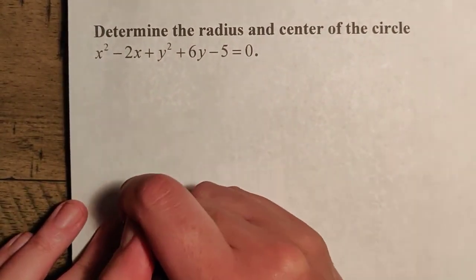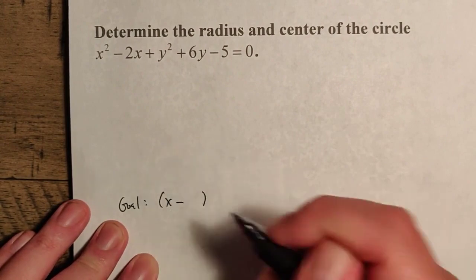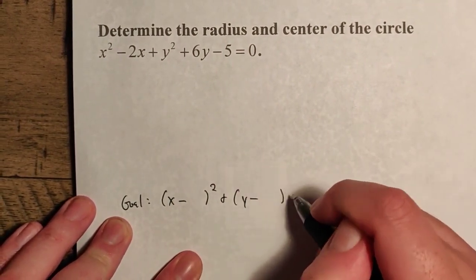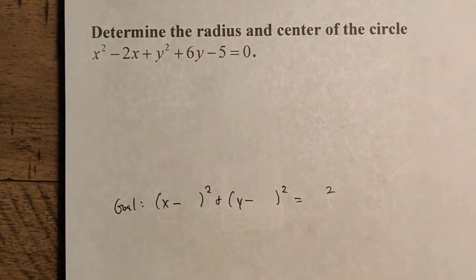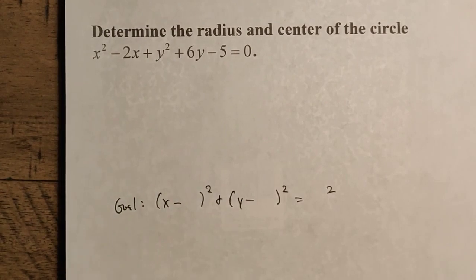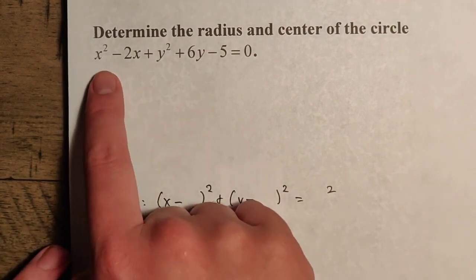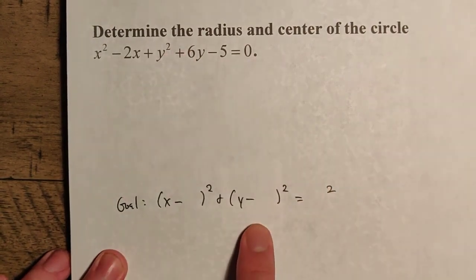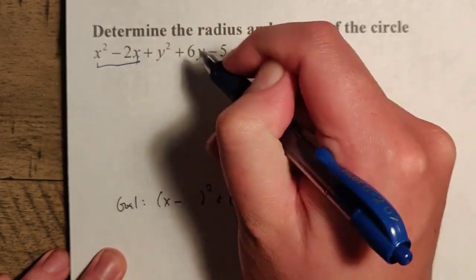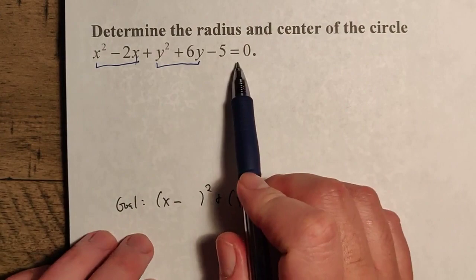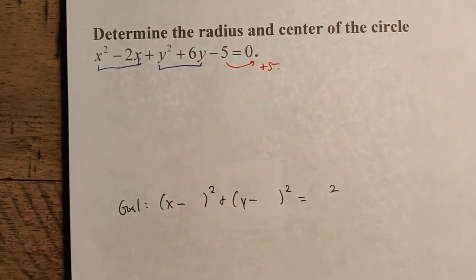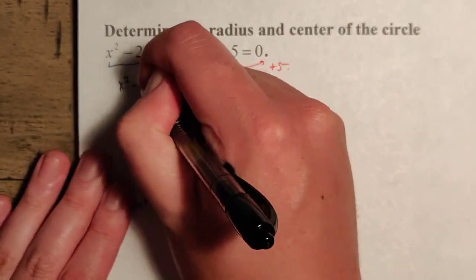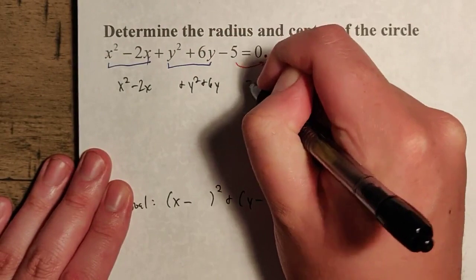Our goal is we want it to look like this: (x minus something)² plus (y minus something)² equals something squared. We want to fill in these spaces properly — we can't just fill them in willy-nilly, because this might not be equivalent. There's a minus 5 over here, so we're going to move that to the right-hand side and make it a plus 5. That turns the equation to x² - 2x + y² + 6y = 5.